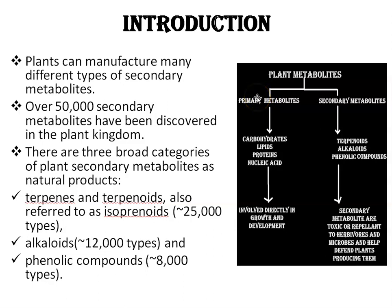Primary metabolites, which include amino acids, carbohydrates, lipids, proteins, and nucleic acids, are compounds that are necessary for cellular processes and are directly involved in the growth and development of plants.